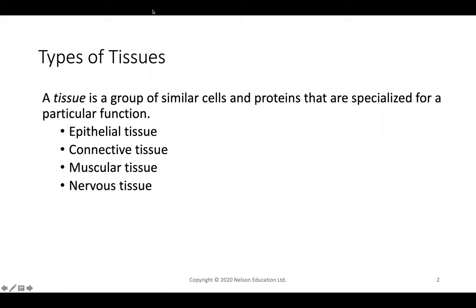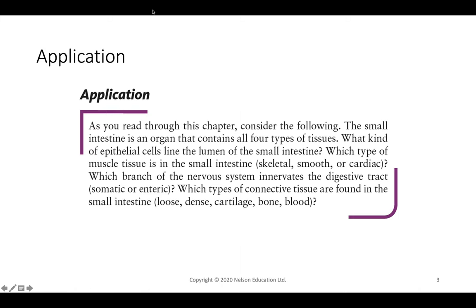Throughout this lecture we'll be talking about the differences between epithelial, connective, muscular, and nervous tissue. Consider this: the small intestines contains all four types of tissues. What kind of epithelial cells line the lumen? Which type of muscle cell is found in the small intestines? Which branch of the nervous system innervates the entire digestive tract? And what types of connective tissue are found in the small intestines?